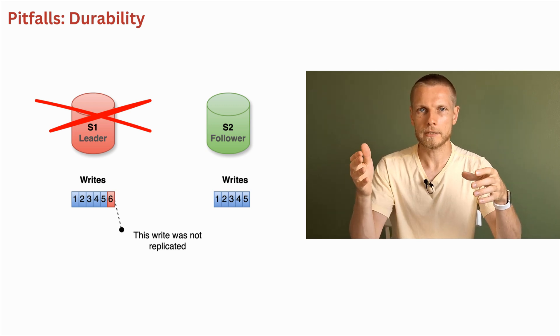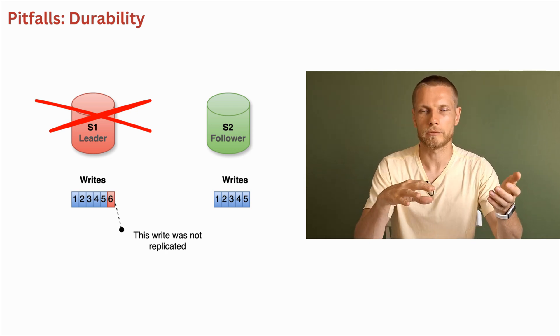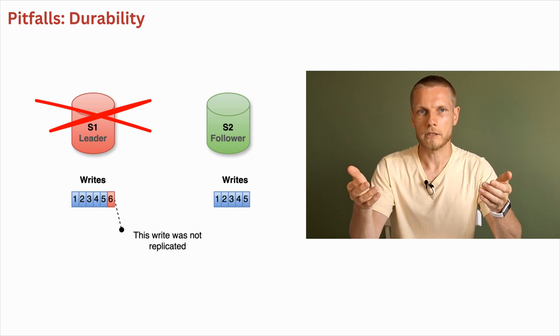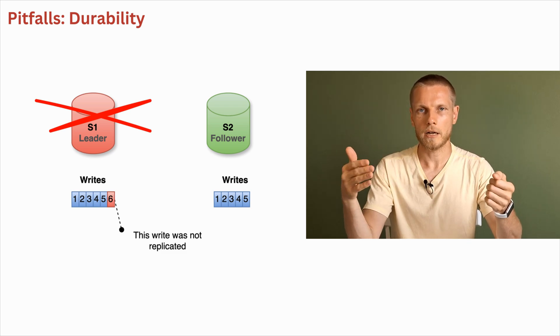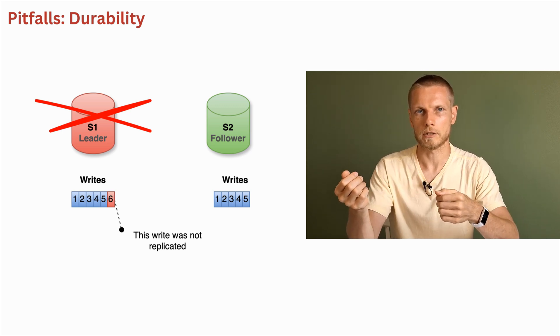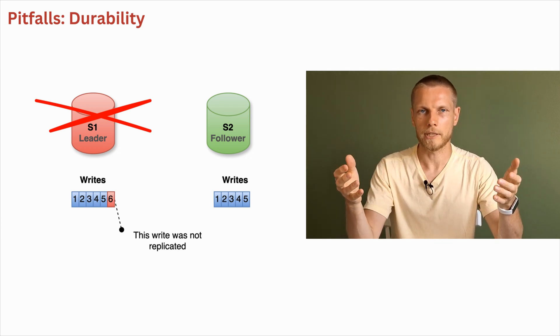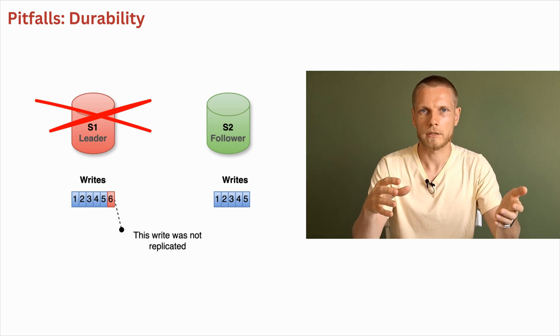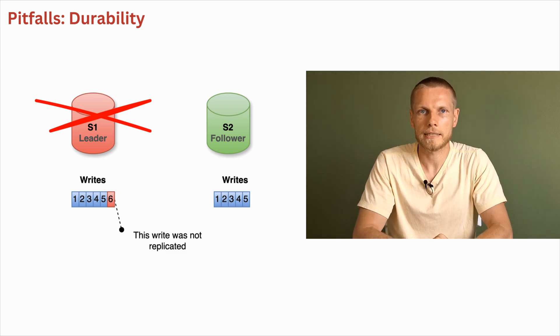However, with asynchronous replication, new leader could have not received all the writes from old leader before it failed. For example, here write number 6 was not replicated at the moment when the leader S1 failed. If the old leader recovers, it might detect that it has a write which is not known to the new leader. And new leader might already have new writes and they could be even in conflict with this not replicated write. Because of this, usually such writes are just getting discouraged and discarded and they are lost forever.